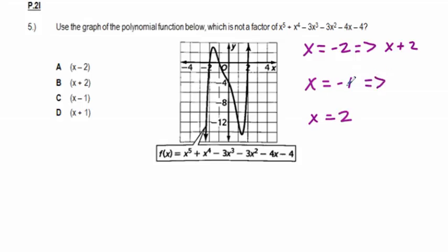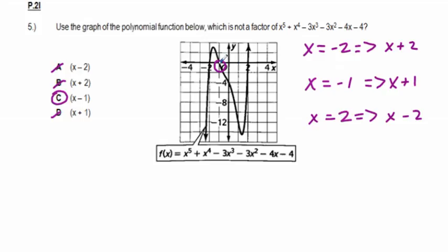The factor x + 1 is associated with x = -1, and x - 2 is associated with x = 2. So x - 2, x + 2, and x + 1 are all factors, but x - 1 is NOT a factor. The trick here is that the zero crosses at x = -1, but the factor is x + 1, not x - 1. If you answered B instead of C, you were tricked — C is correct.